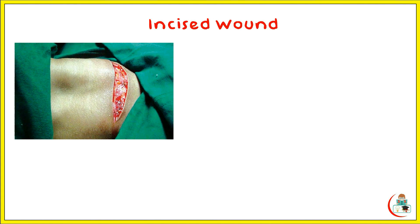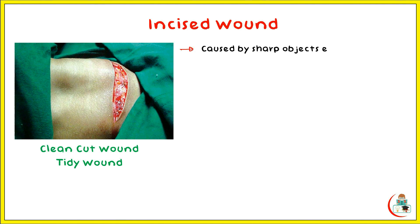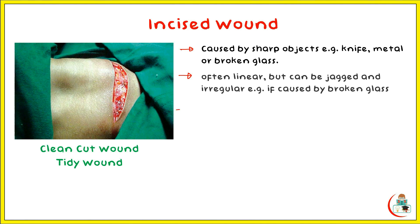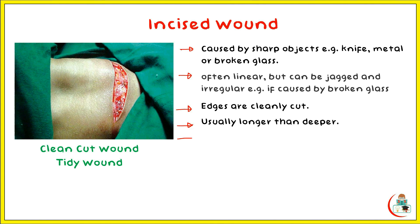Let's start with the incised wound, also known as a clean cut wound or tidy wound. It is caused by sharp objects like a knife, sharp metal, or broken glass. The wound is often linear, but can be jagged and irregular, for example if caused by broken glass. Edges are clearly cut and sharp, and it is usually longer than deeper.